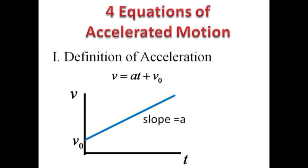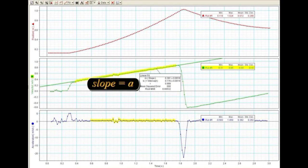Now we will hold our data up for comparison with each of the four equations of accelerated motion in turn. Begin with the definition of acceleration, which may be written as: final velocity v equals a times t plus initial velocity v₀. There is a linear relationship between velocity and time, with the constant acceleration being the slope. Highlight the appropriate region of the velocity versus time graph and perform a linear fit. The slope of the straight line is a measure of the acceleration, which you may again compare with g sin theta.